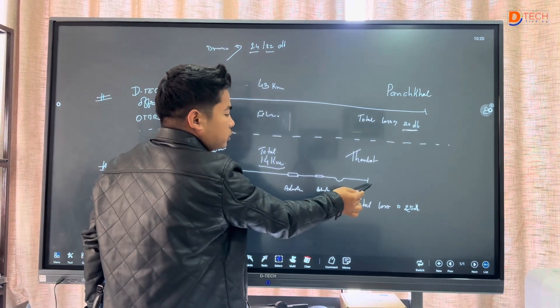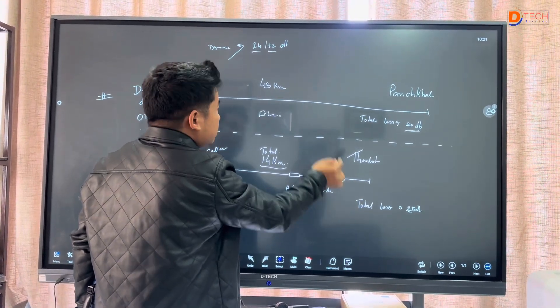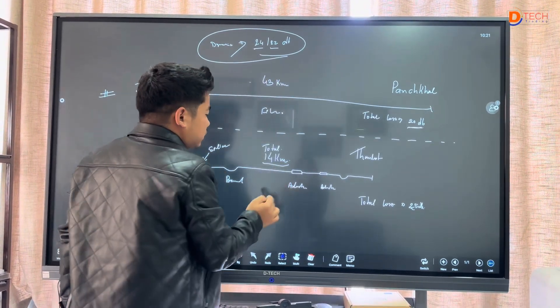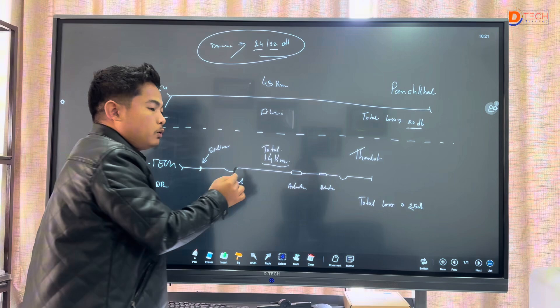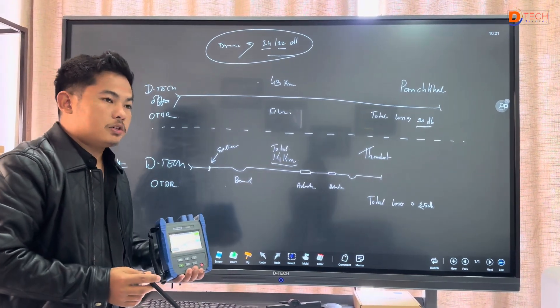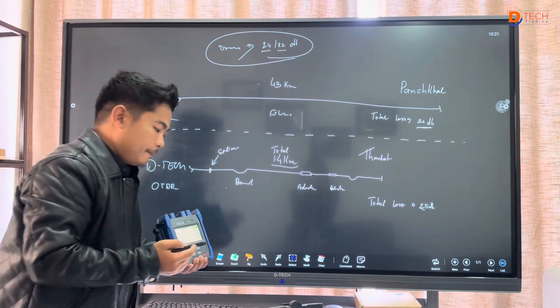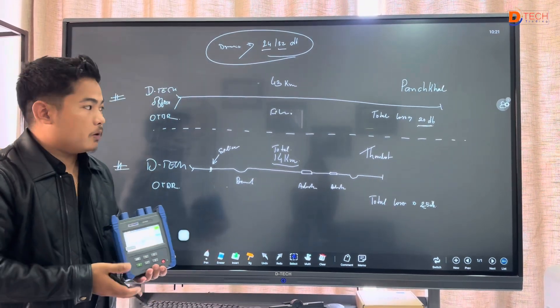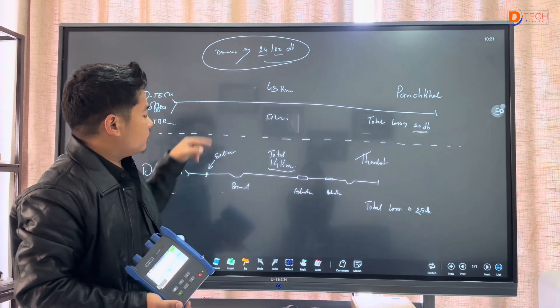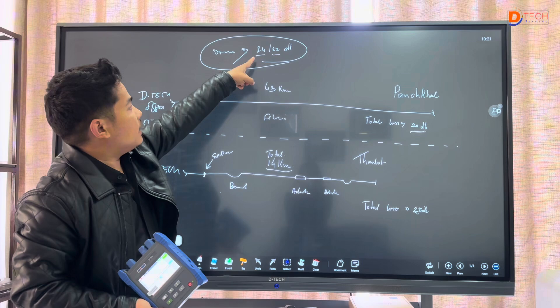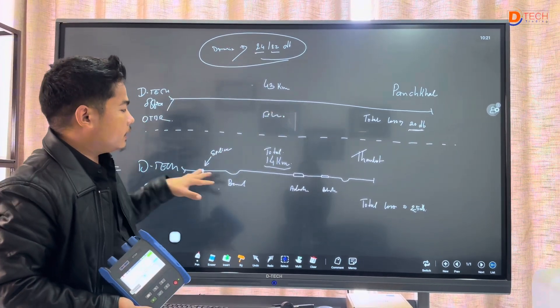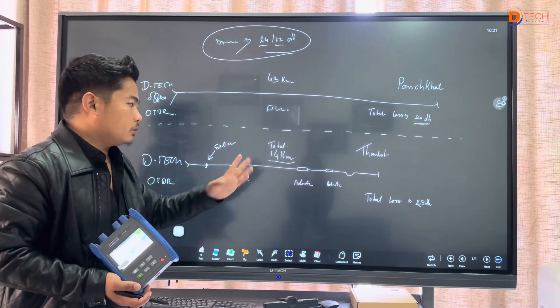You have the trace cursor here. This shows the distance, for example 100 kilometers or 120 kilometers. It depends on the dynamic range. The total dynamic range relates to the fiber loss.